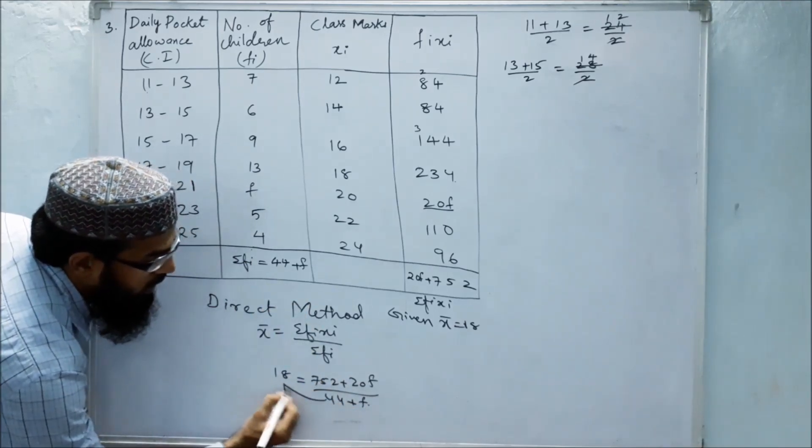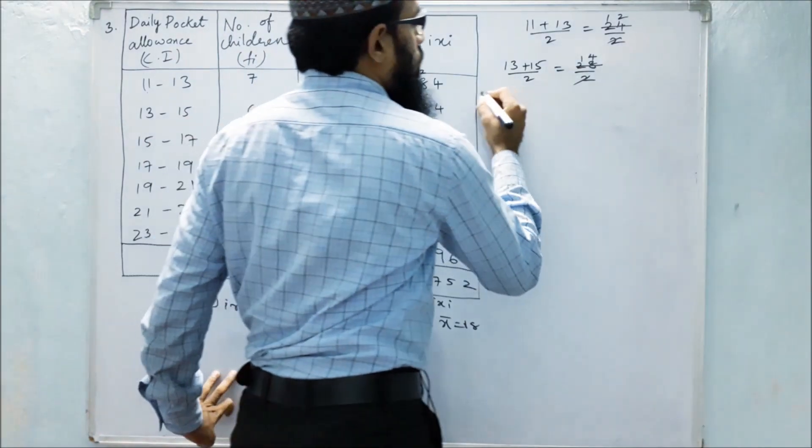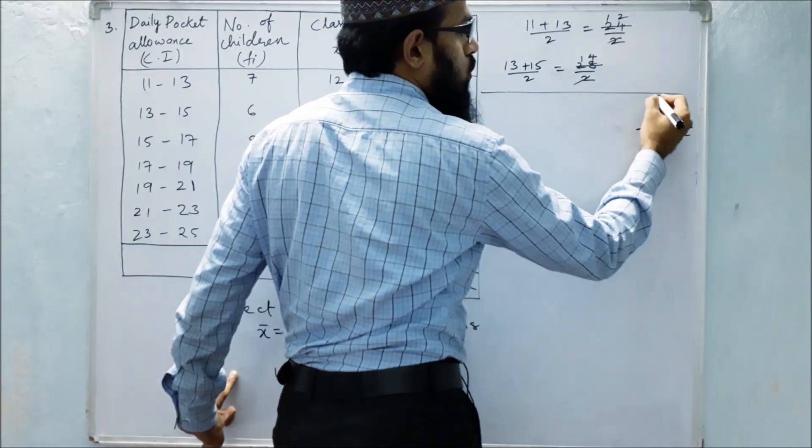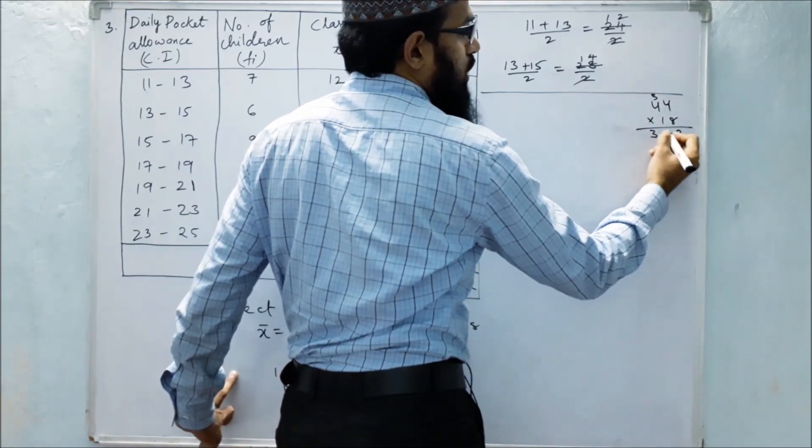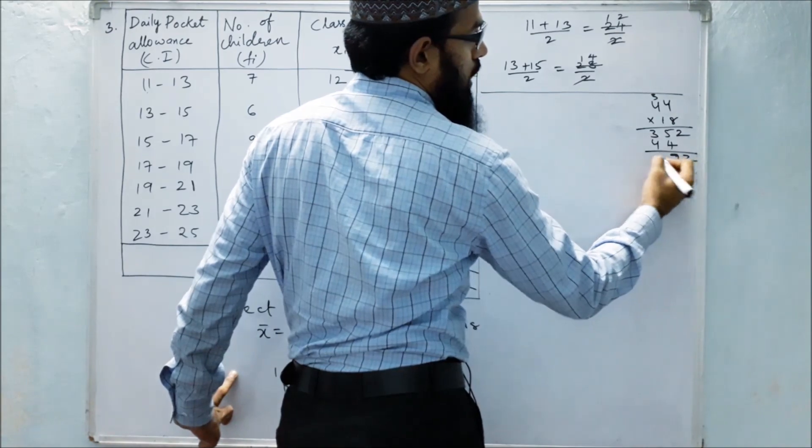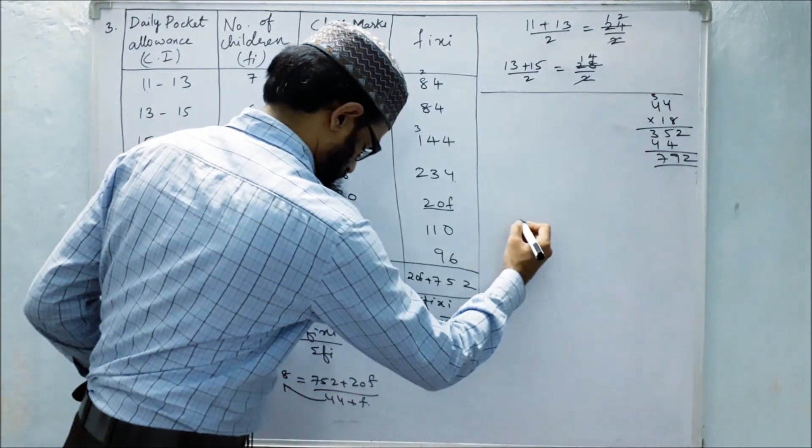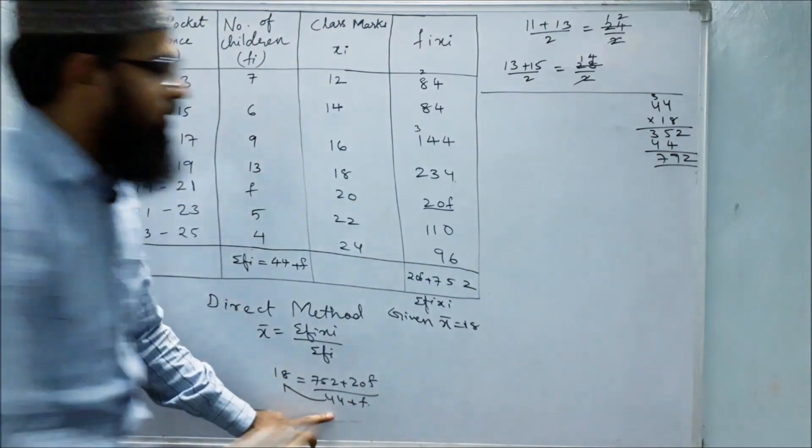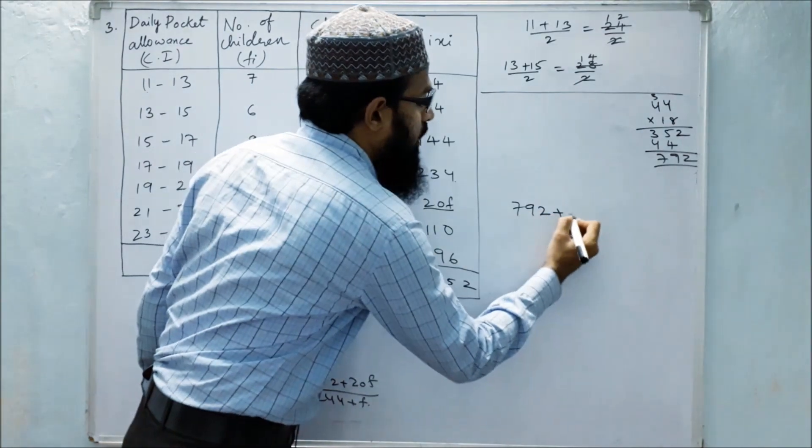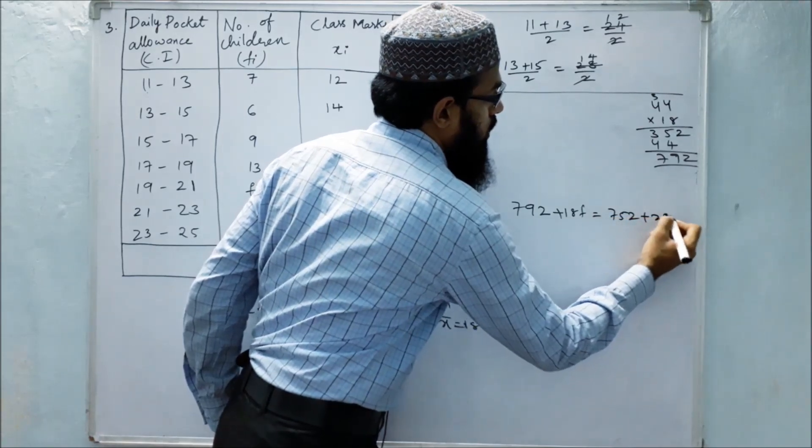We will multiply this: 44 into 18 equals 792. 18 into f is 18f. So 792 plus 18f equals 752 plus 20f.